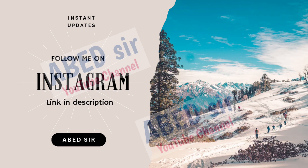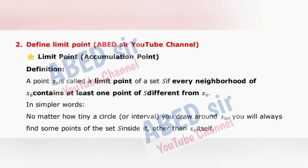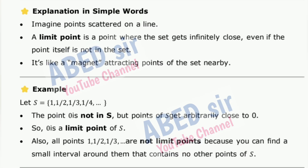Next important short question: Define Limit Point (Accumulation Point). A point x₀ is called a limit point of a set S if every neighborhood of x₀ contains at least one point of S different from x₀. In simpler words, no matter how tiny a circle or interval you draw around x₀, you will always find some points of the set S inside it, other than x₀ itself. In simple words, imagine points scattered on a line — a limit point is a point where the set gets infinitely close, even if the point itself is not in the set.